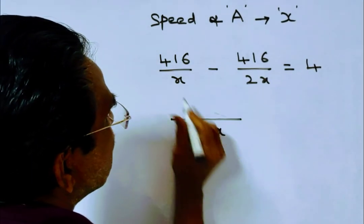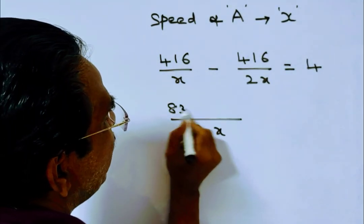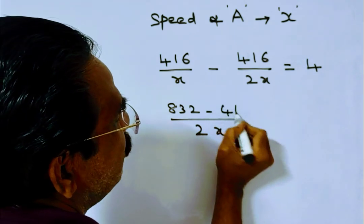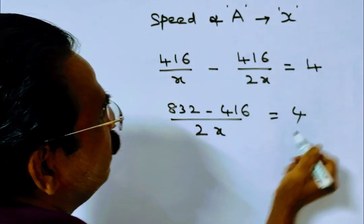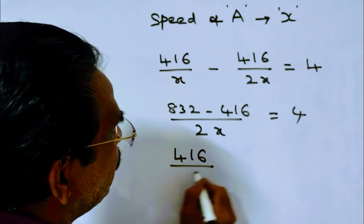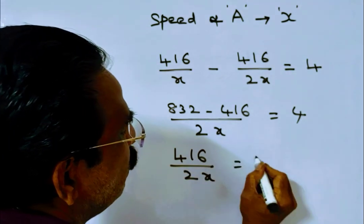So here the LCM is 2x. 2 into 416, 832 minus 416 equals 4. So 416 by 2x equals 4.